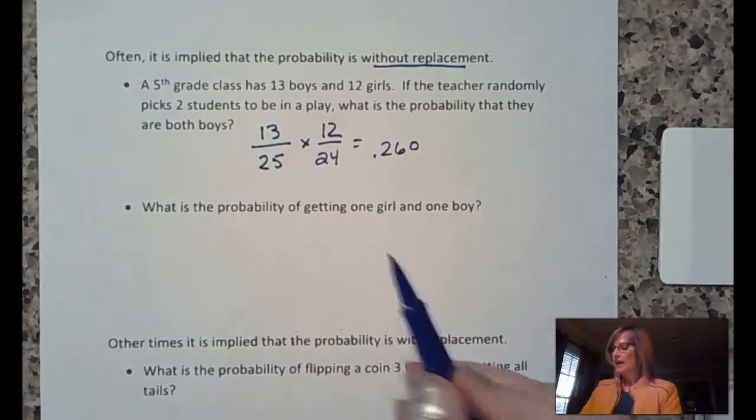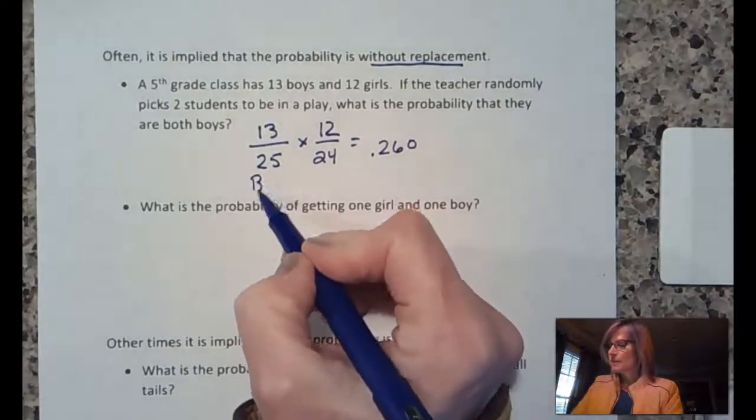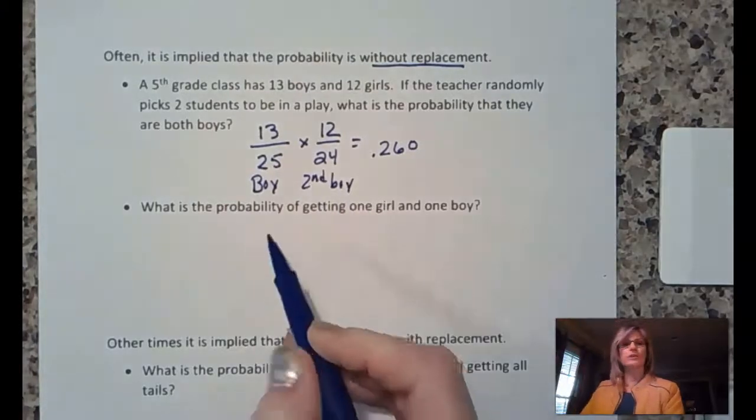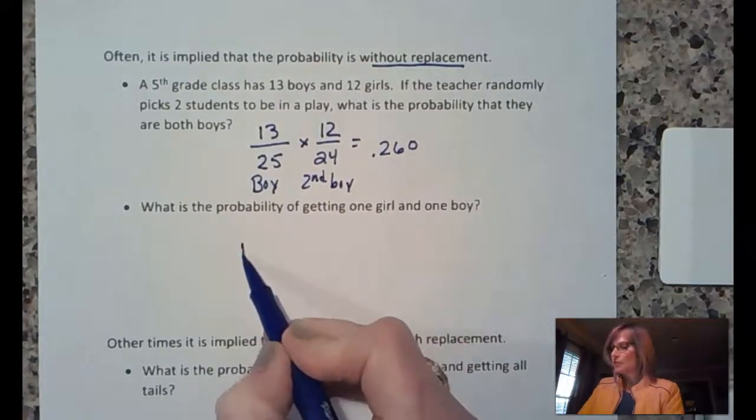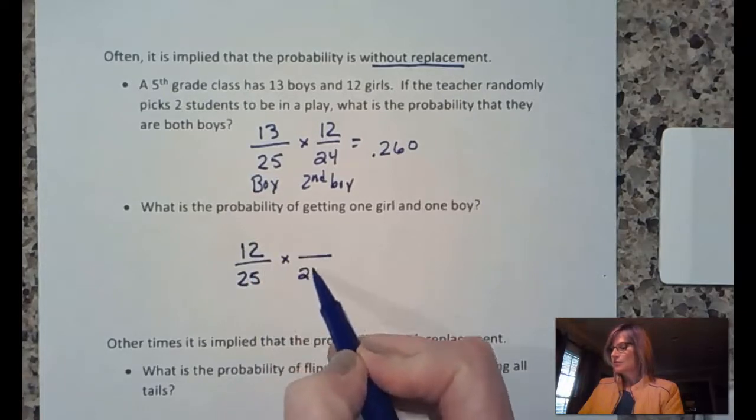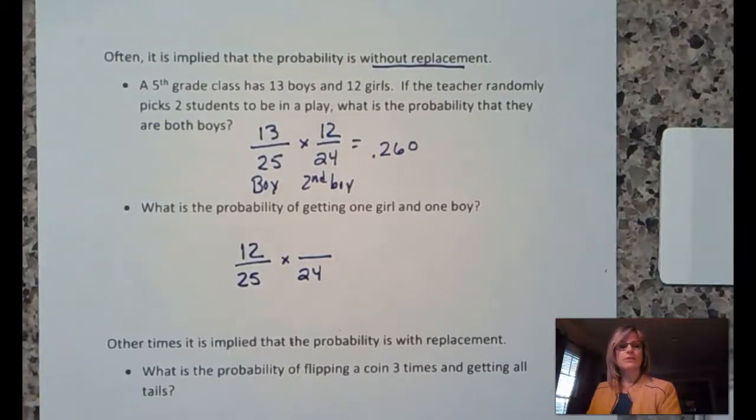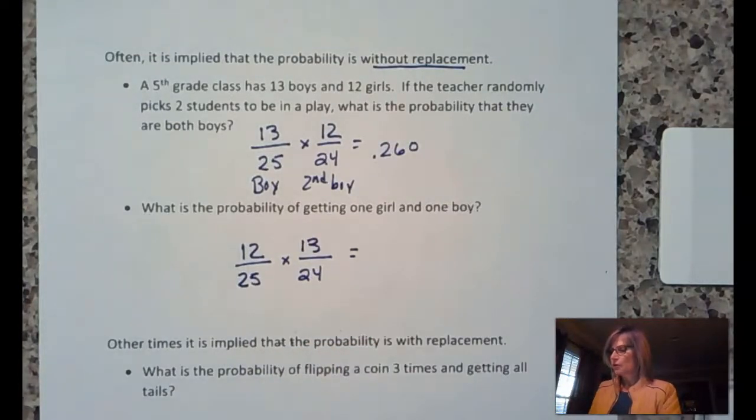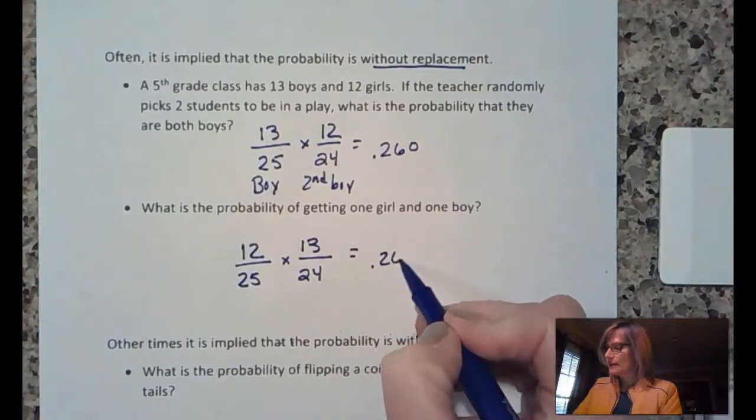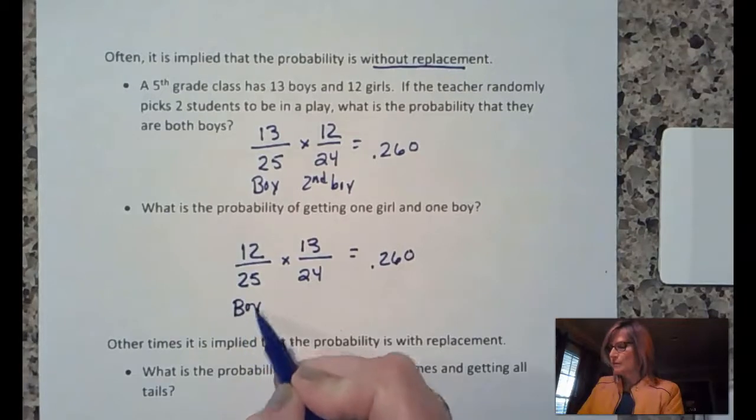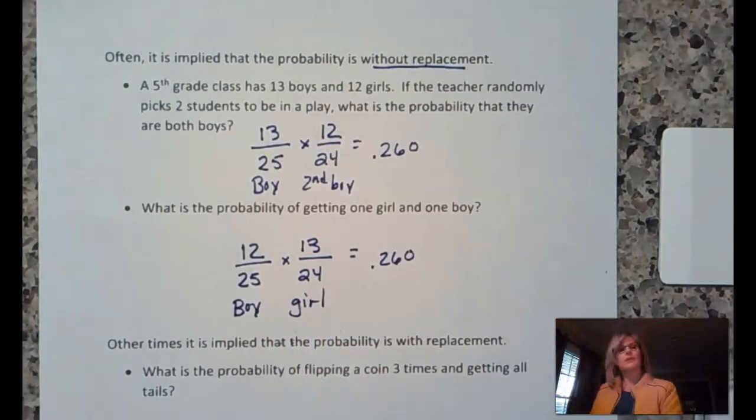This was a boy and then a second boy. So, this time, we're going to pick a girl. To begin with, we have 12 girls out of all 25 students. And then, we have 24 students left. Of those 24 students, how many of those are boys? 13. We are going to end up with exactly the same answer, but for two different reasons. So, we picked a boy and then we picked a girl.